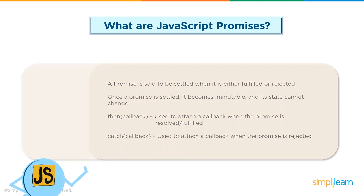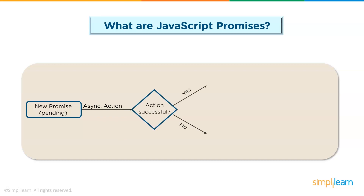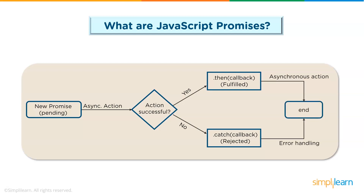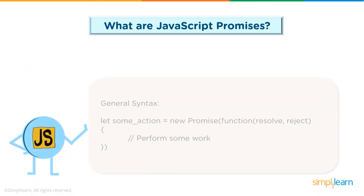Let's look at a quick flowchart to understand promises better. You start with a new promise in the pending state. The promise runs an asynchronous action, then we check if the action is successful. If yes, the then() method is called; if no, the catch() method is called. If fulfilled, the asynchronous action is performed; if rejected, error handling is performed. Finally, the values of these methods are returned to the promise.